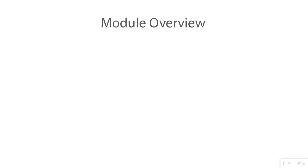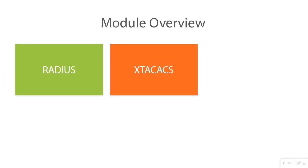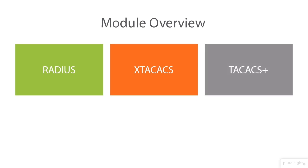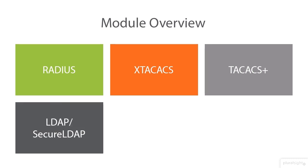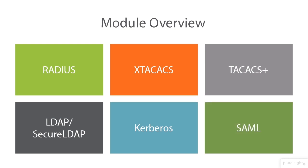We have basically six areas that I want to touch on. The first is RADIUS, or RADIUS Servers. Next will be something referred to as XTACACS. Next we have TACACS Plus, a newer version of that specific protocol and authentication mechanism. We'll talk about LDAP and Secure LDAP. Then we'll talk about Kerberos. And then lastly, something referred to as SAML. So by the end of this, we're going to know what all of these things mean. So let's go ahead and get started.